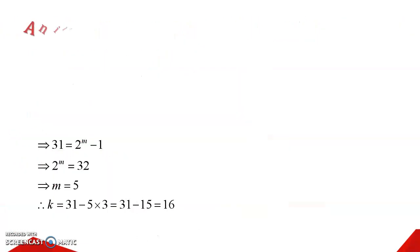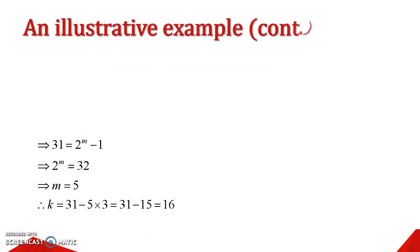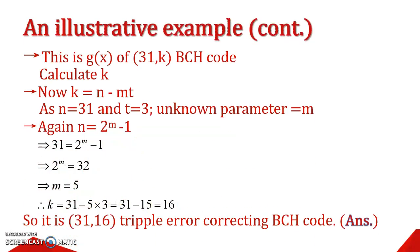So, if the polynomial is given, the generator polynomial is given to you, and if you know the message bit, you can calculate the information or the encoded bit. That means, the message code.